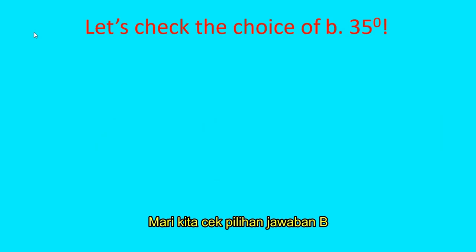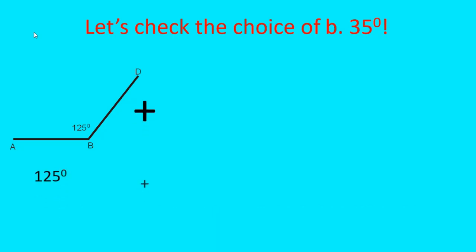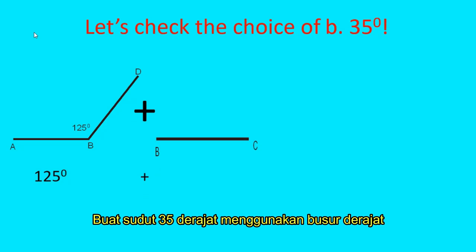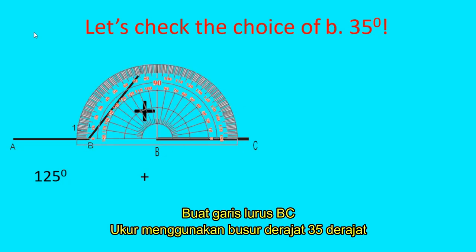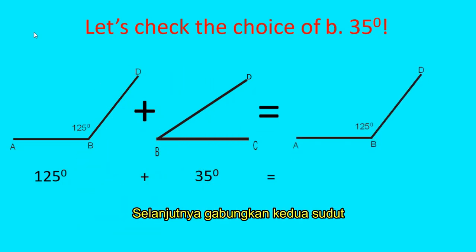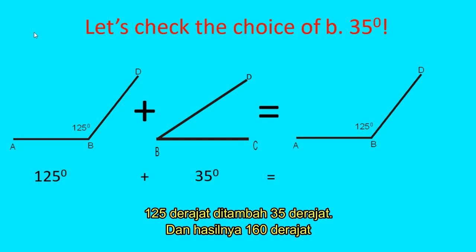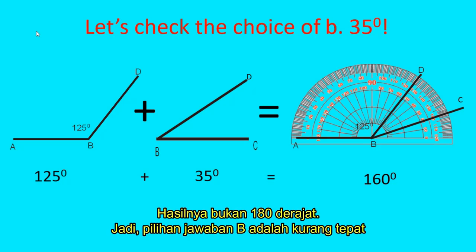Let's check choice B, 35 degrees. From the question, the angle is 125 degrees. Using the protractor, measure 35 degrees, then combine the two angles. 125 degrees added to 35 degrees — the result is 160 degrees. It is not 180 degrees, so choice B is incorrect.